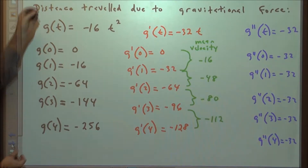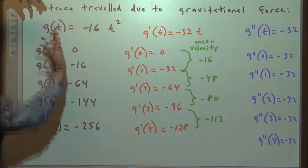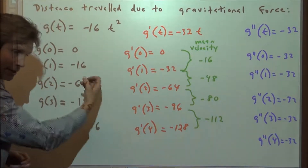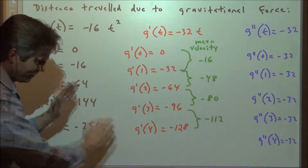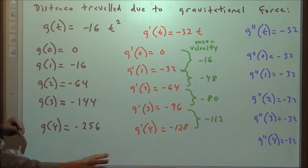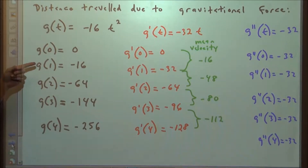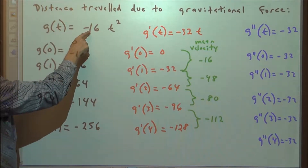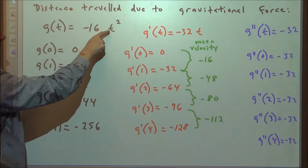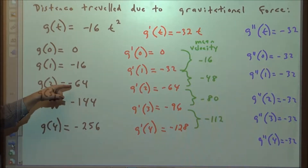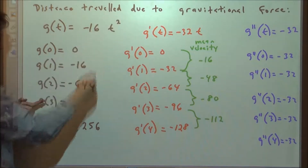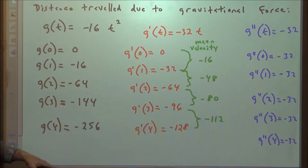After one second, the object has fallen 16 feet. Gravity is going to make that velocity pick up — it's going to go faster, its speed is going to increase. After two seconds, if you put a two in here, that object has fallen 16 times 4, so it's dropped 64 feet. After three seconds, negative 16 times 3 squared, it's dropped 144 feet, and so on. This function tells us how far it's dropping.